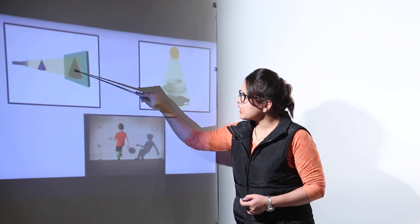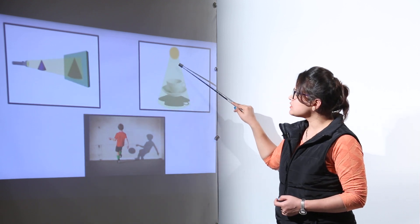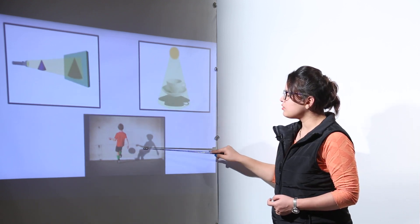Here we have seen a shadow of this triangle formed. We can see the shadow of cup, we can see the shadow of this boy playing.